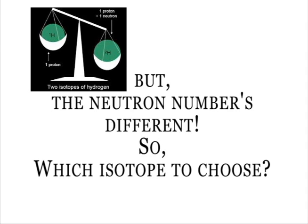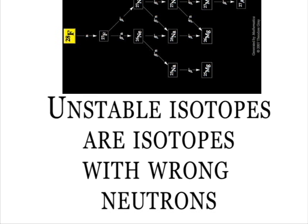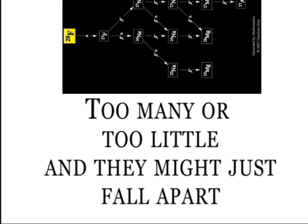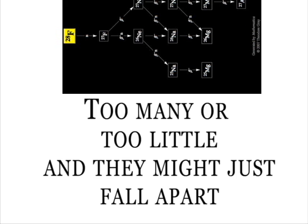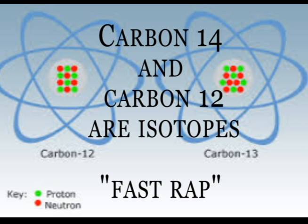Stable isotopes have the right number of neutrons. Too many or too little and their matches fall apart — fall apart, fall apart. Too many or too little and their matches fall apart.